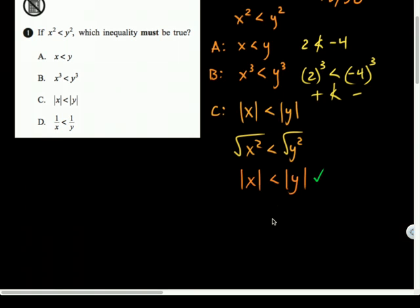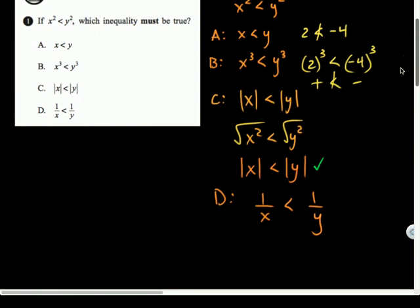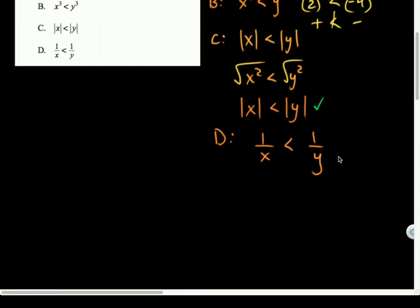But let's consider D for a minute. D is actually an interesting case regarding the magnitude of these numbers. 1 over x is less than 1 over y. So, let's see. Let's consider some counterexamples for that, where x squared is bigger than y squared. So, like, 4 and 9 again. So, let's say x is 3. And, oh, sorry, x is 2. Is 1 half less than 1 third?